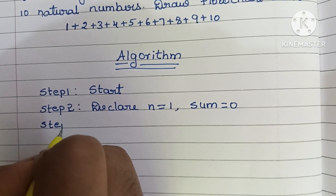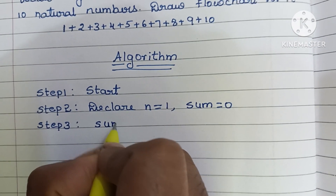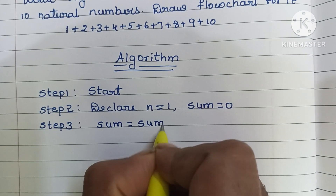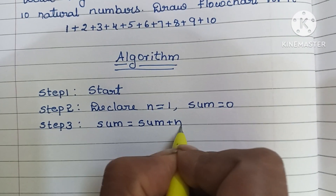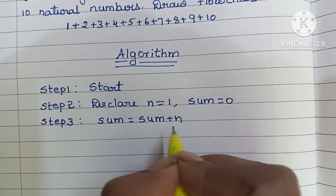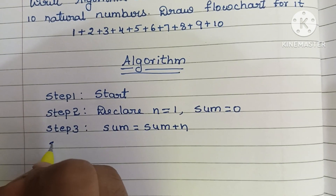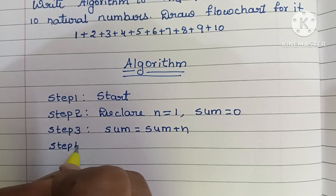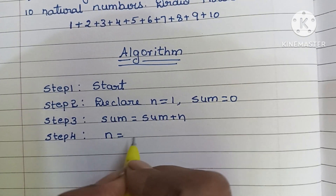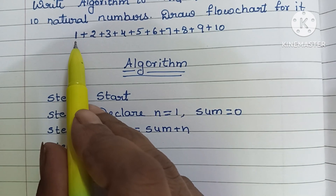Step 3: We have to calculate the sum value using the formula sum = sum + n. Step 4: We have to calculate the n value, that is n = n + 1. Initially n value is equal to 1, and next it is increased by 1.